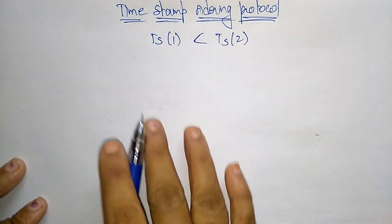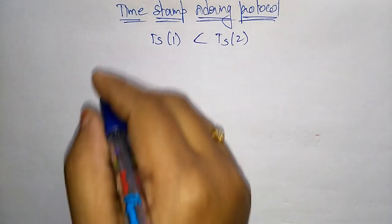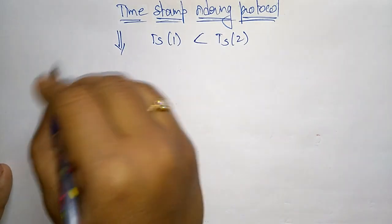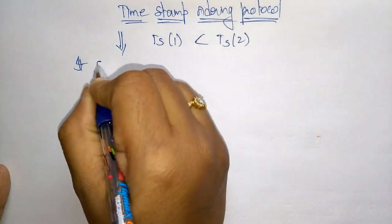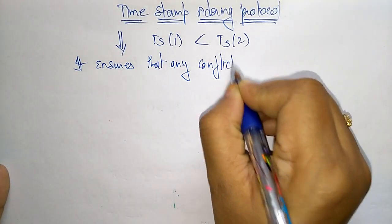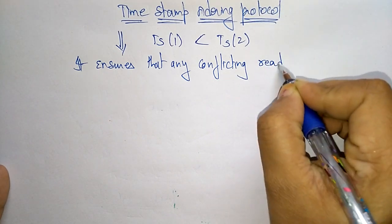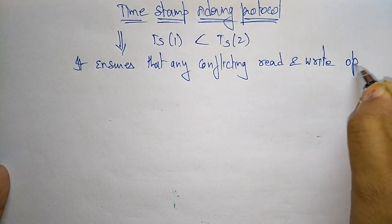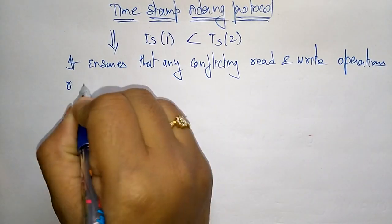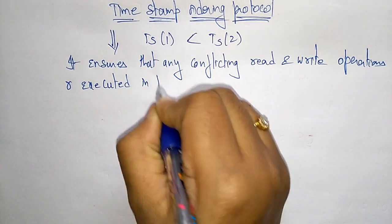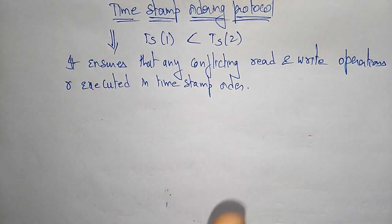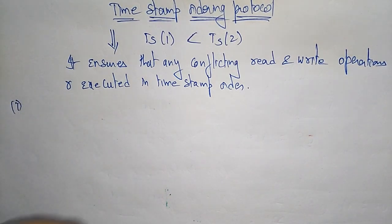Now coming to the Timestamp Ordering Protocol. This protocol ensures that any conflicting read and write operations are executed in timestamp order. That is what we call the Timestamp Ordering Protocol. Let us see the issues that occur in timestamp ordering.